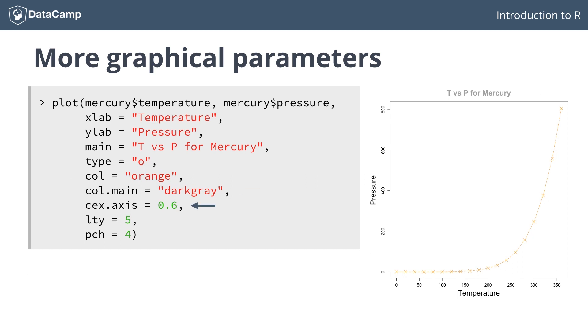Next, the cex.axis argument specifies with which ratio the original font size of the axis tick mark should be multiplied. With cex.axis equal to 0.6, we have small labels. With cex.axis equal to 1.5, the labels become huge. Just as the col parameter has col.variants for other elements in the plot, the cex parameters also has its cex.variants.